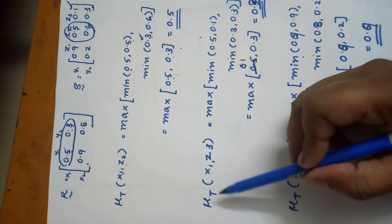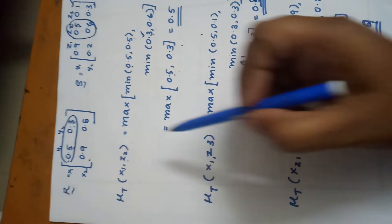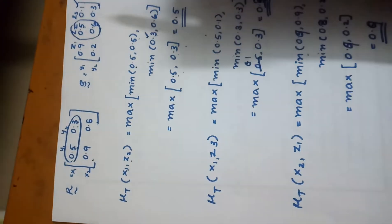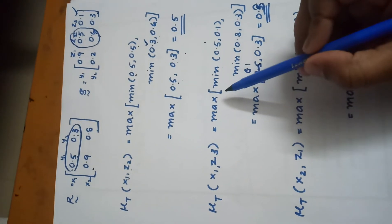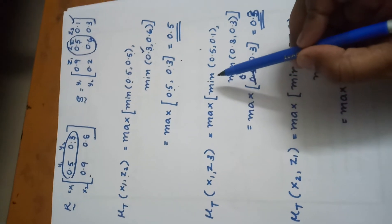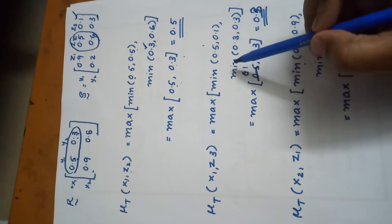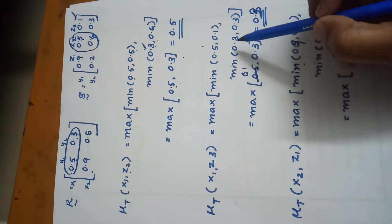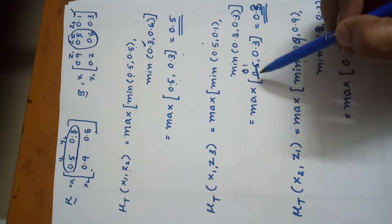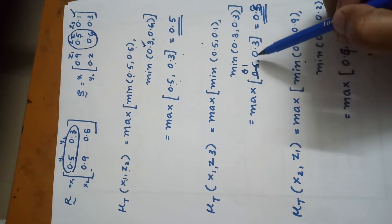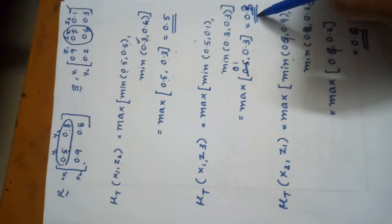We calculate μT(x1, z3), that is the first row and third column. That equals max of [min(0.5, 0.1), min(0.3, 0.3)], which is maximum of 0.1 and 0.3, equal to 0.3.